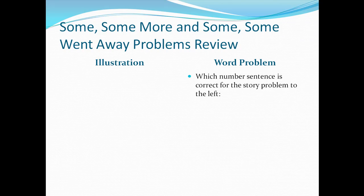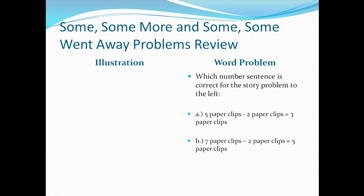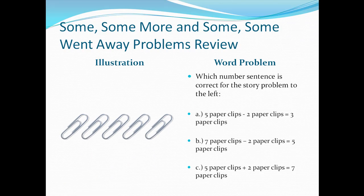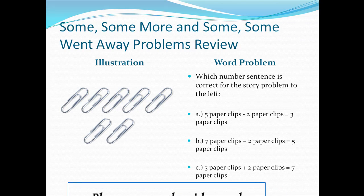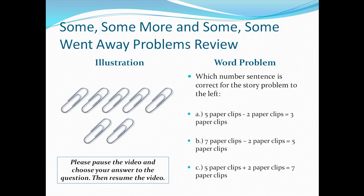So every problem will ask you which number sentence is correct for the story problem to the left. A: Five paperclips minus two paperclips equals three paperclips. B: Seven paperclips minus two paperclips equals five paperclips. Or C: Five paperclips plus two paperclips equals seven paperclips. Watch the illustration in two parts, then pause the video. The correct answer choice is letter C. There were five there to start, two more came along, now we have seven paperclips.